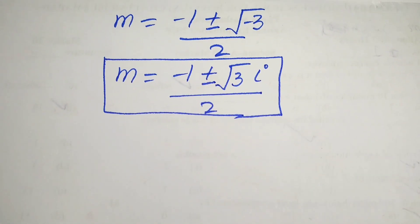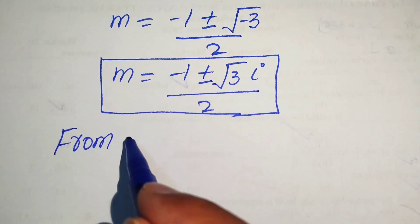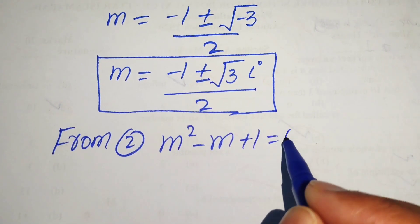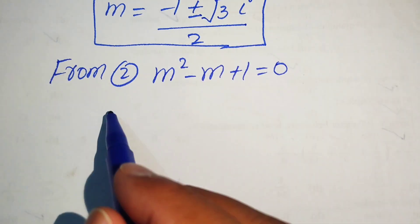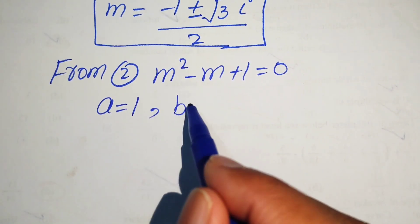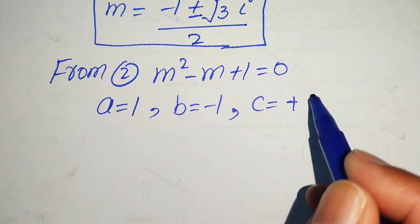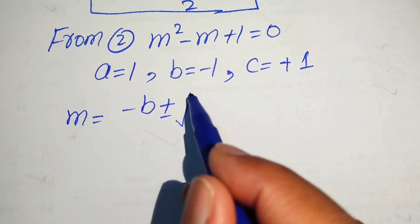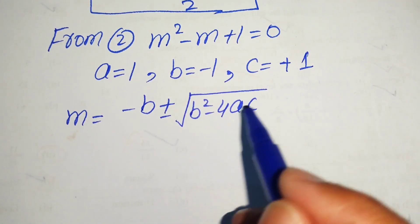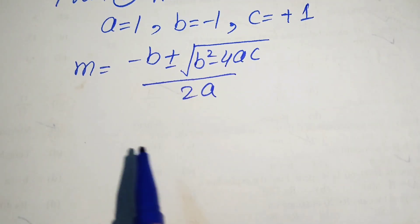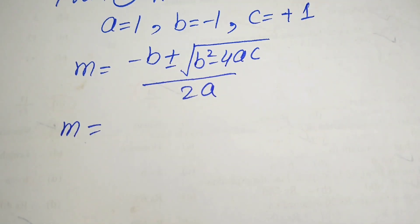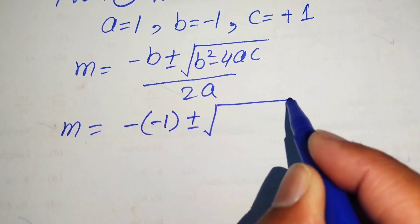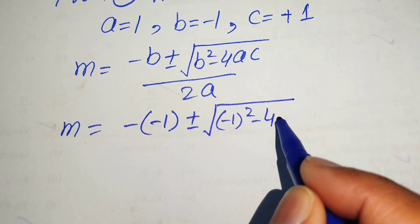Now we find the other two roots using equation 2: m squared minus m plus 1 equals 0. Applying the quadratic formula again, the coefficients are a equals 1, b equals minus 1, and c equals 1. The formula gives m equals minus b plus or minus square root of b squared minus 4ac, divided by 2a.